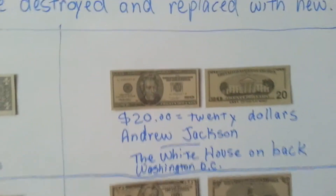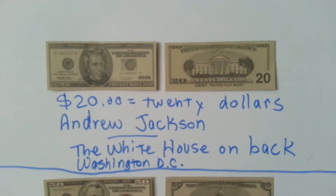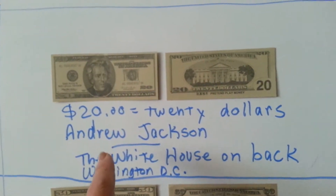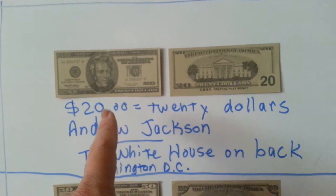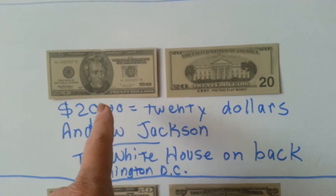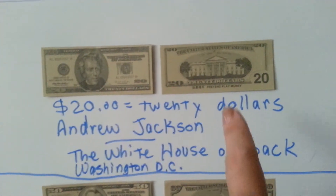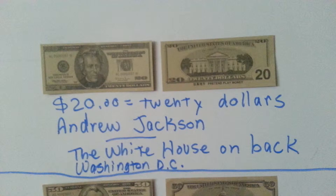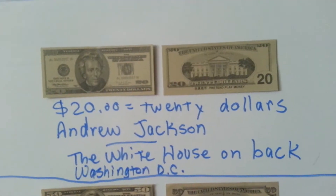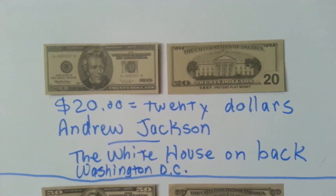This is a twenty dollar bill. It's got Andrew Jackson on the front, and a picture of the White House in Washington D.C. on the back.